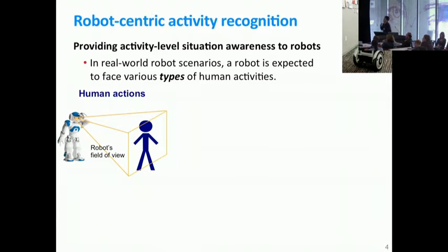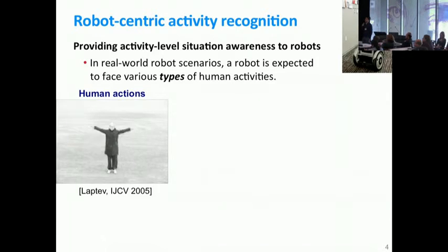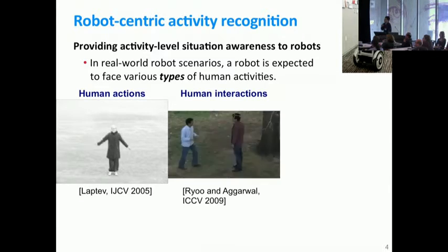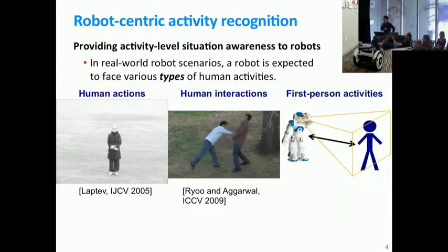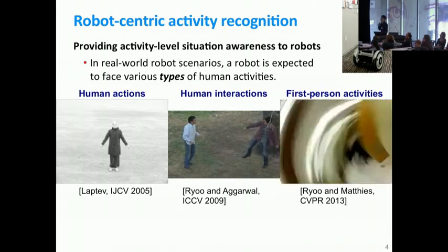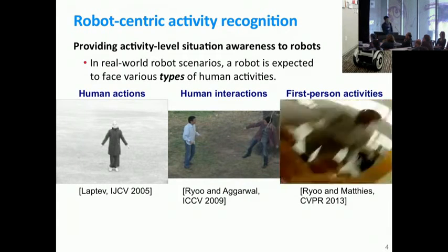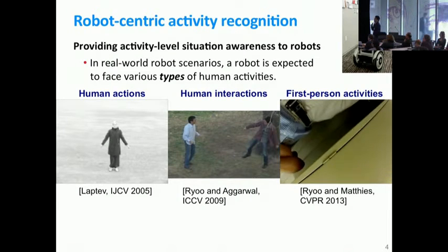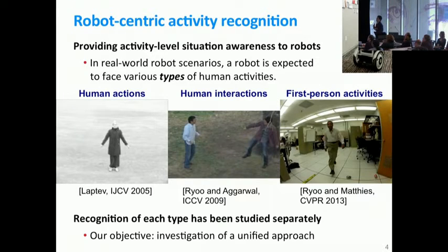For example, the robot may watch a single person performing an action or a gesture. The robot may also observe two persons doing something like fighting or punching each other from its own camera. And most importantly, the robot may observe a person doing an activity targeting itself, like somebody punching the robot. This is exactly how things will look like, and the main point is that all these different types of videos appear simultaneously.